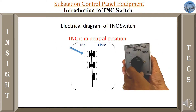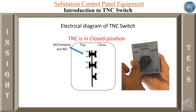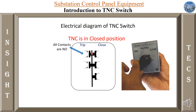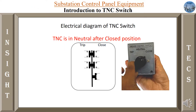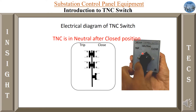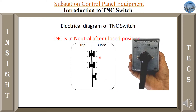Now let us see what happens when we close this switch. When you close this switch, the NO contacts become closed — they become NC contacts. Once you bring the switch back from close to neutral position, these NC contacts again become NO contacts. But there is a third contact, which is used for auto-reclosing mode. Even after closing, when we come back to neutral, this contact remains NC — it has not become a NO contact.